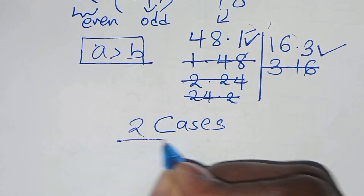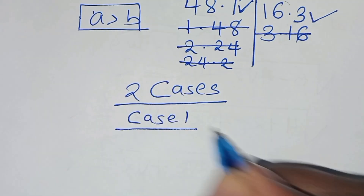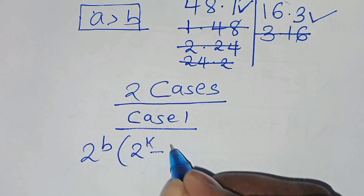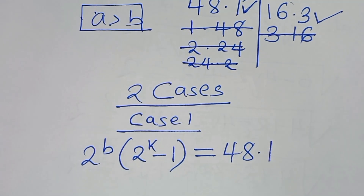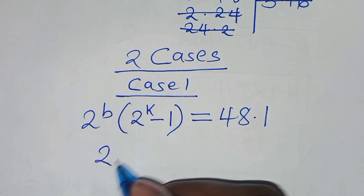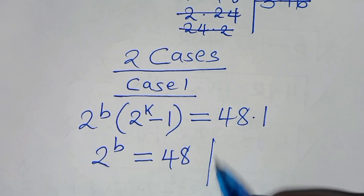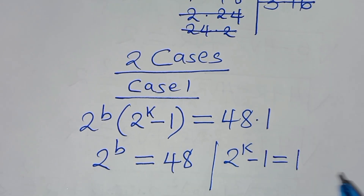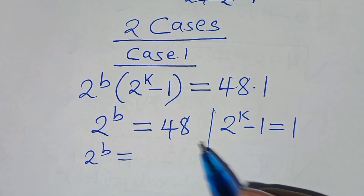Case 1: we have 2 to the power of b times, in parentheses, 2 to the power of k minus 1, this is equal to 48 times 1. So in this case, 2 to the power of b is equal to 48, and 2 to the power of k subtract 1 is equal to 1.